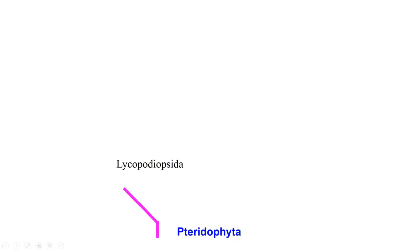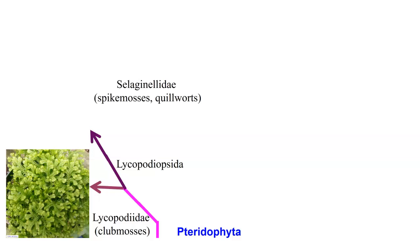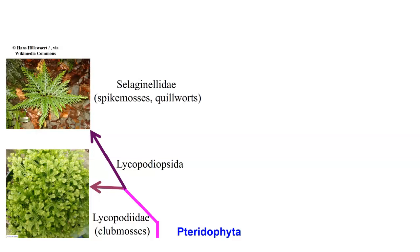We're going to start out looking at the lycopodiopsida, which has two basic groups. One is called the lycopodiae, which are the club mosses. The club mosses look like a moss but are starting to get a little bigger and have more of a vascular system. The other part is the selaginellidae, which are the spike mosses and quillworts. These are low-growing, down close to the ground, and starting to get into a more hardened form able to exist on dry land.